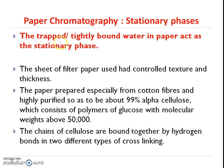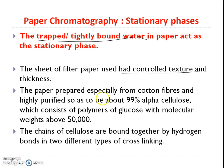In paper chromatography, the trapped or tightly bound water in paper acts as the stationary phase. The sheet of paper used has controlled texture and thickness. The paper is prepared especially from cotton fibers and highly purified so that about 99% of alpha cellulose is present.